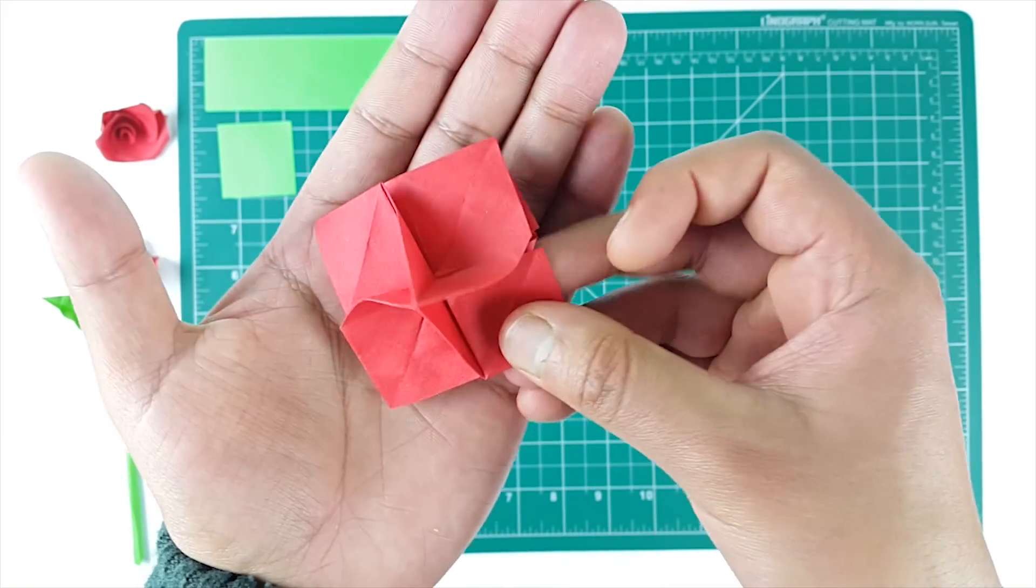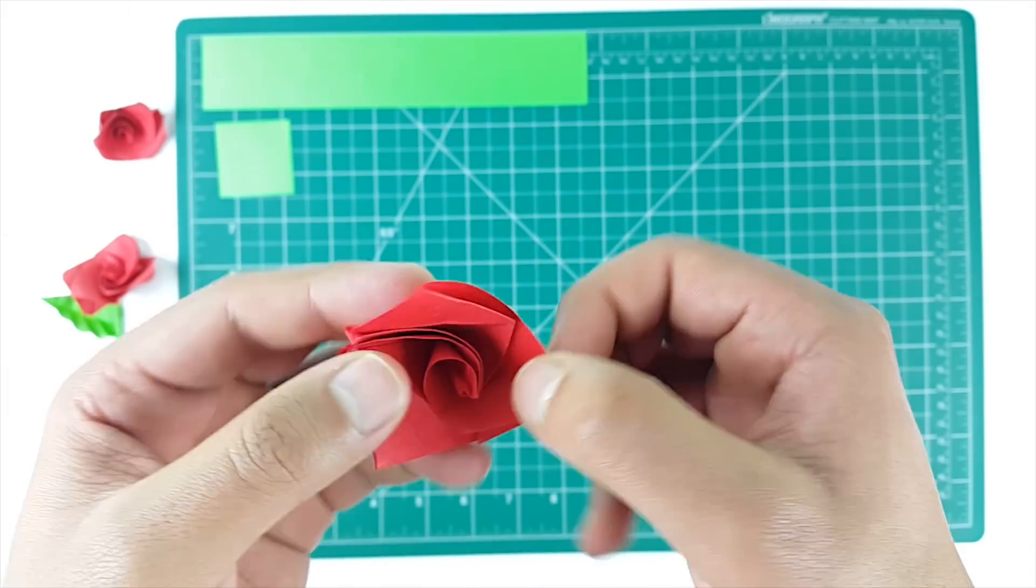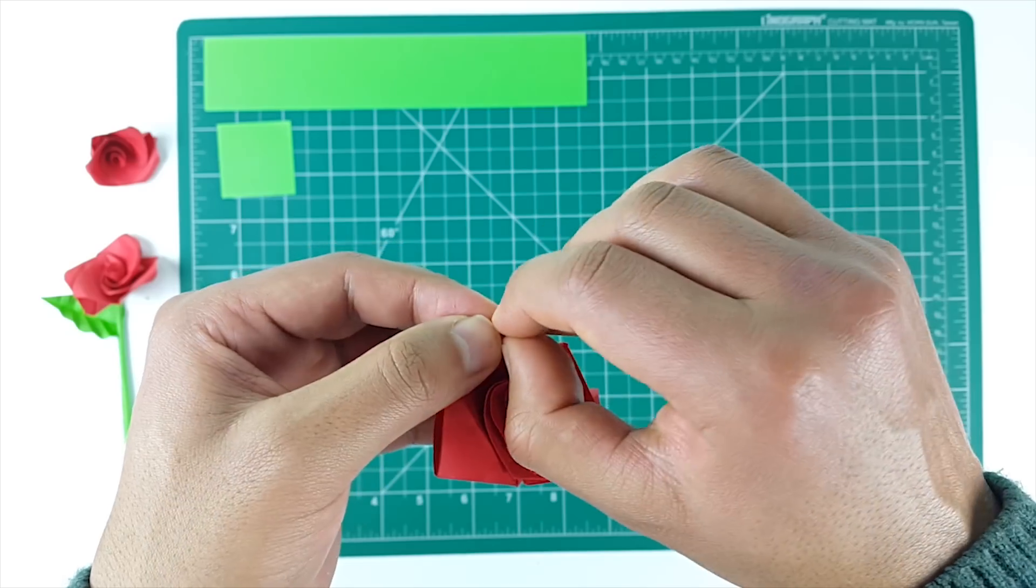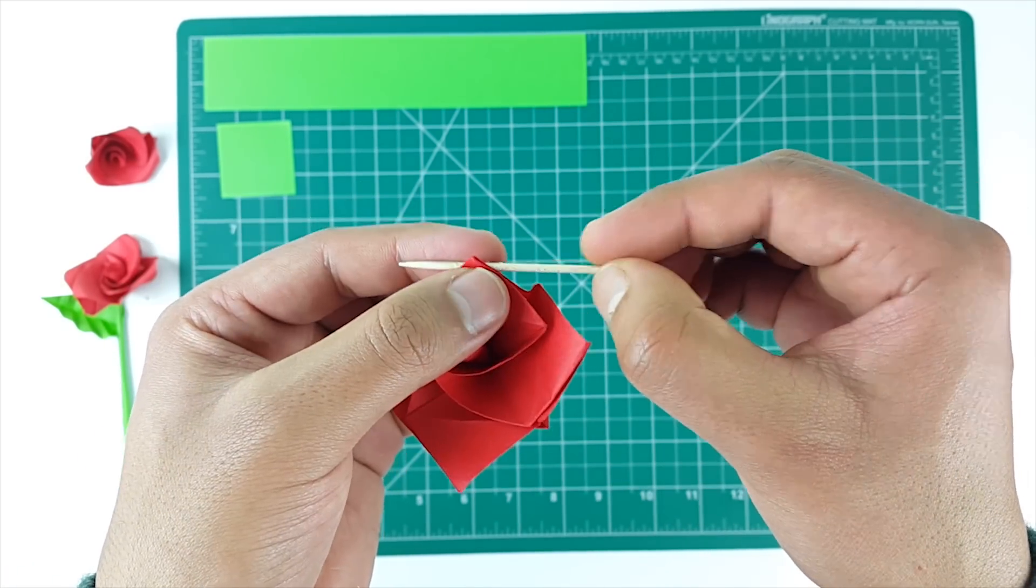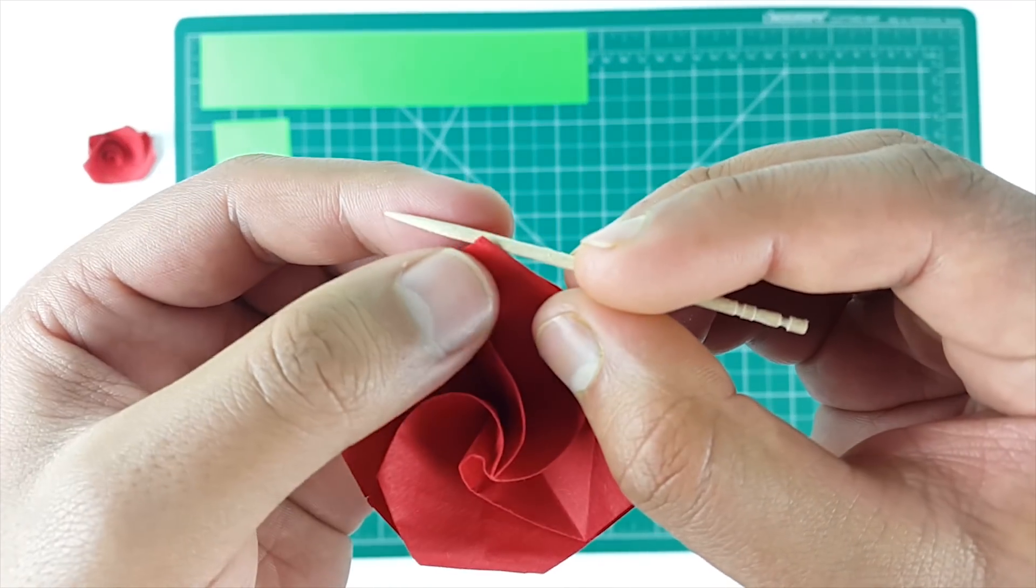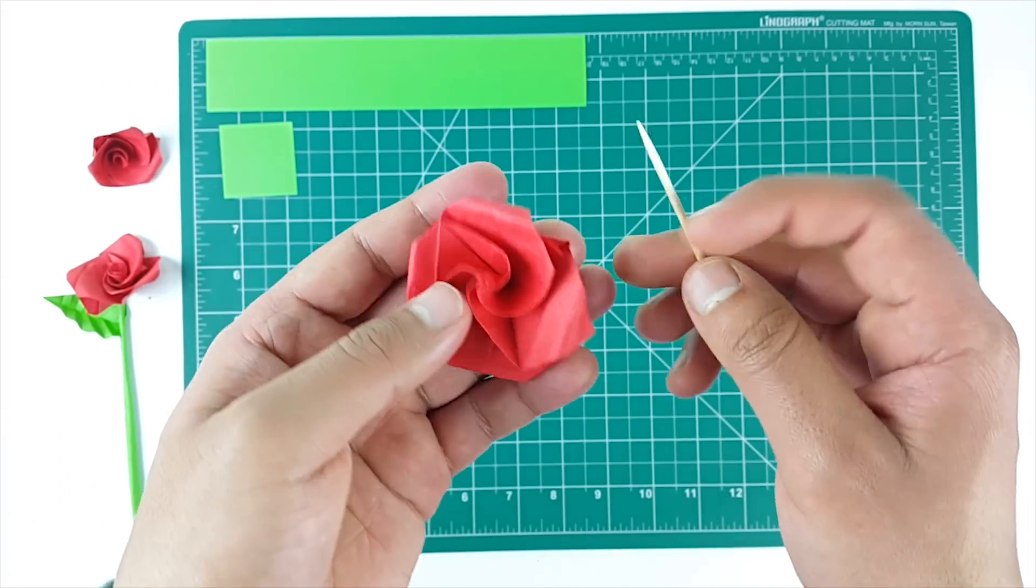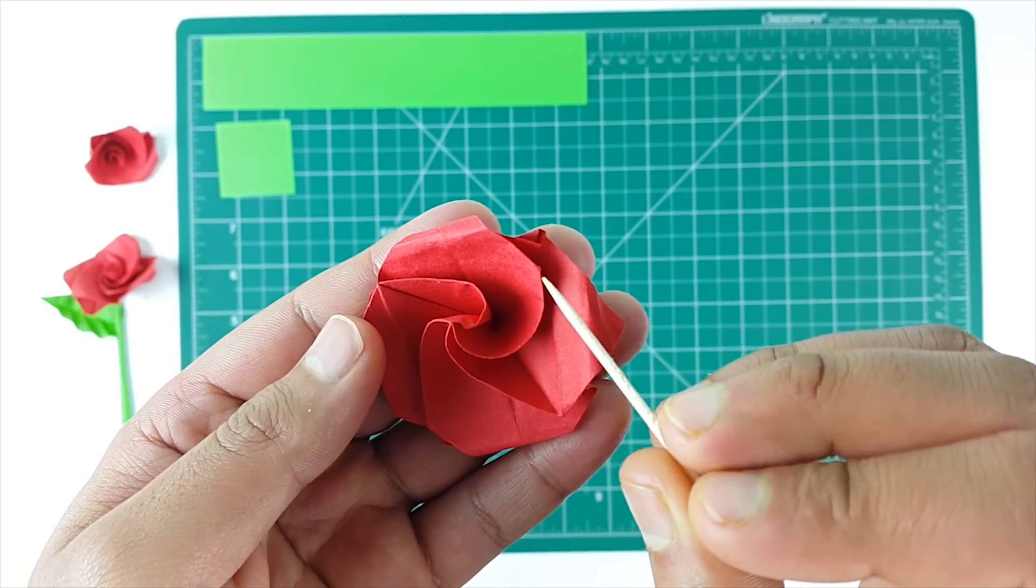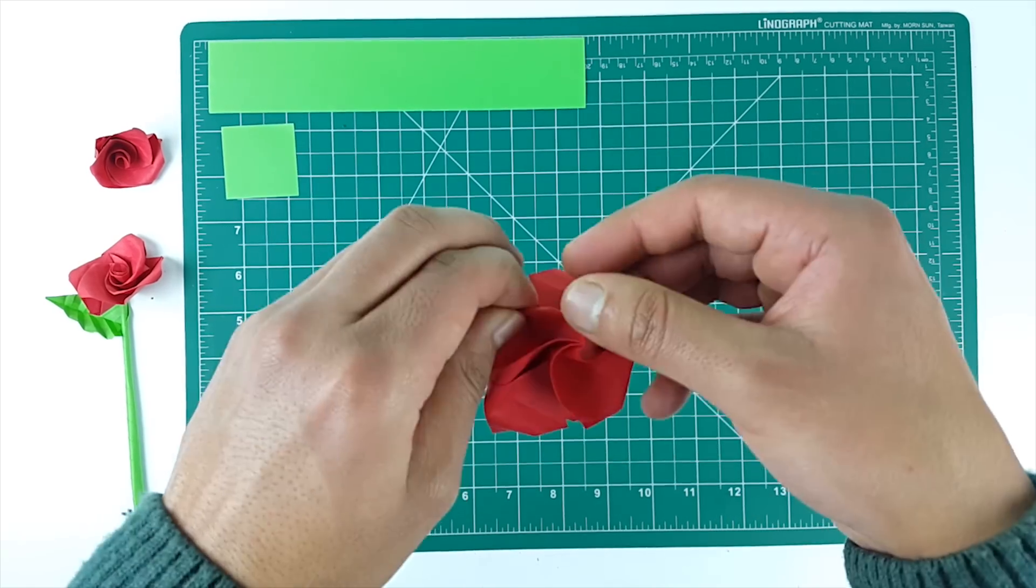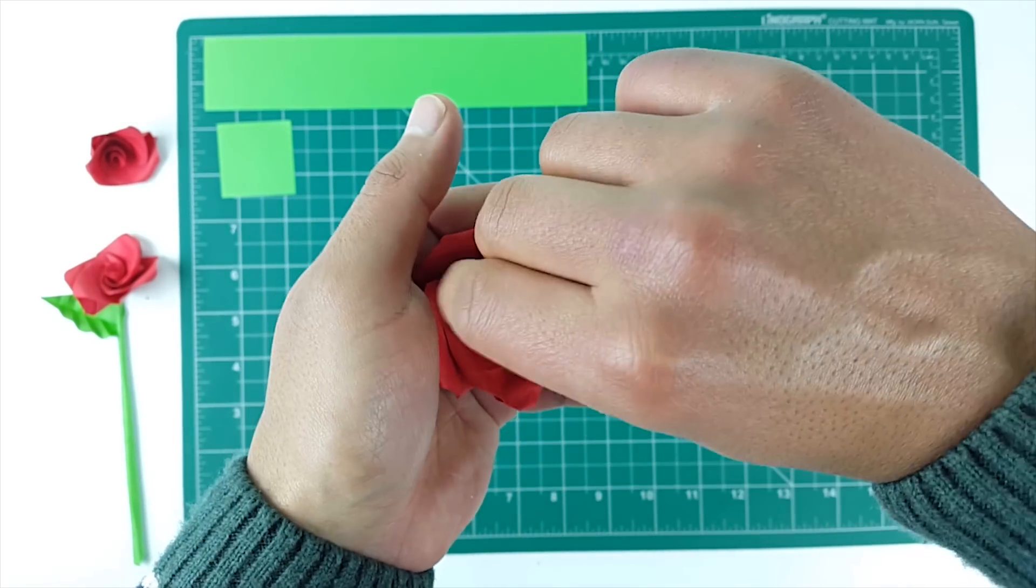So our rose is almost ready. Now hold it in your hand and start rotating the inner portion like this. Now take a toothpick and start curling the pointed edges. Now repeat for the inner sides. As you can see there are three pointed inner sides, so we will also be curling these edges. After the curling is done, again rotate the inner side and our rose is ready.